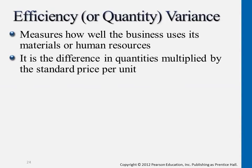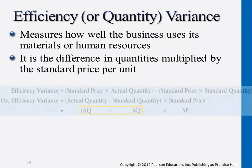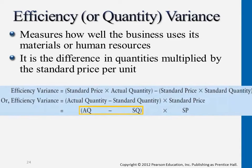The other area is efficiency variance — also called quantity variance. It means that if you only expected to spend three pounds of materials producing a certain product but ended up spending five pounds, the difference in quantity is then multiplied by the standard price per unit. That gives you the efficiency variance.